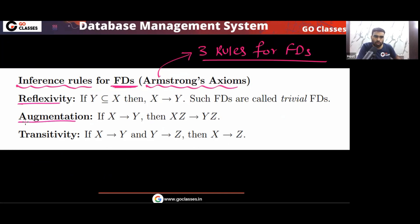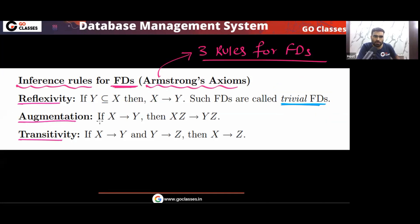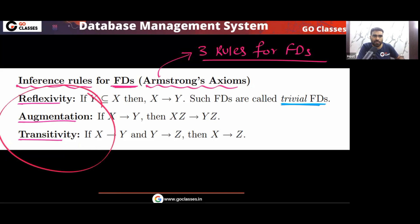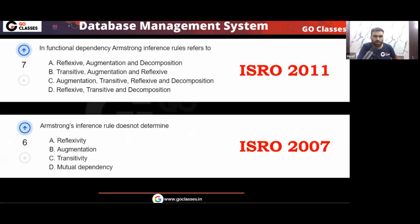The three Armstrong inference rules are: reflexivity, augmentation, and transitivity. Reflexivity says that if Y is a subset of X, then X determines Y — this is the same as a trivial FD. Augmentation says that if X determines Y, then XZ determines YZ. Transitivity says that if X determines Y and Y determines Z, then X determines Z. So the answer for the ISRO 2011 question is option B.